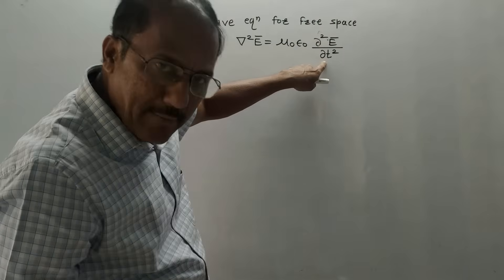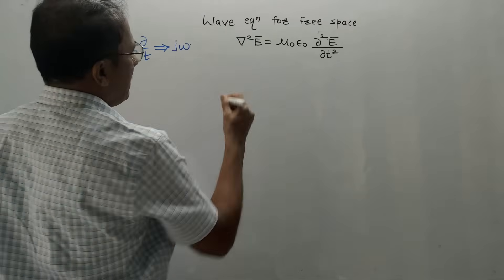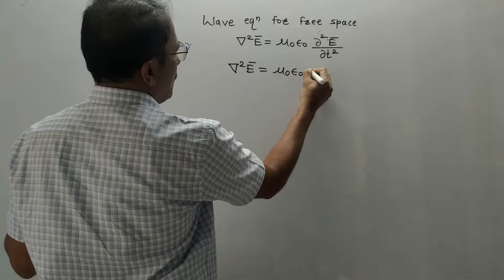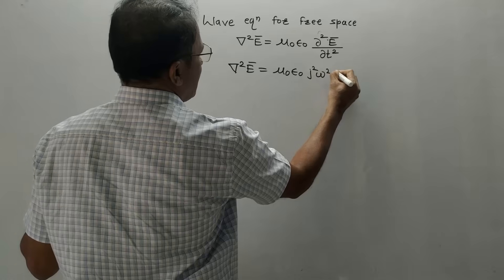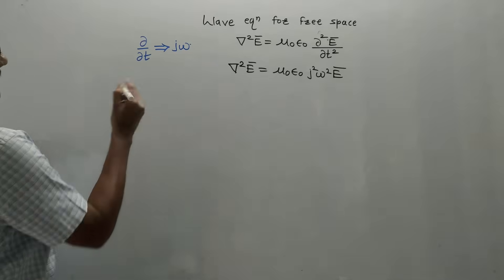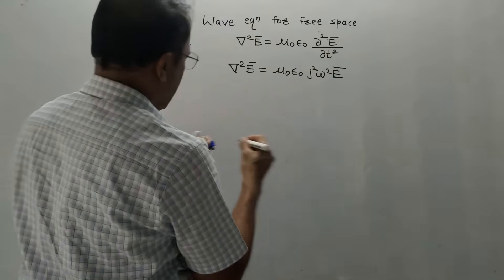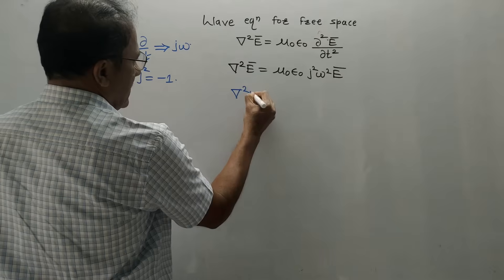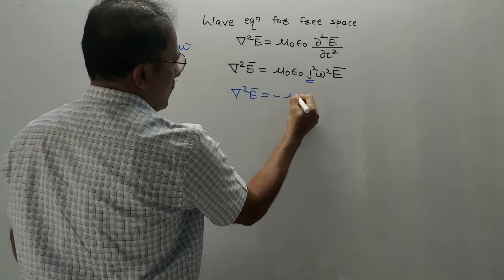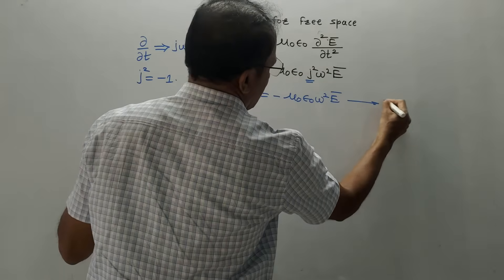This term contains (∂/∂t)², so it becomes j² and ω². The next equation can be written as: del squared E-bar equals μ₀ε₀ · j²ω² · E-bar. Remember the mathematical identity: j² equals minus 1. Substituting this, it becomes: del squared E-bar equals −μ₀ε₀ω² · E-bar. Let us call this equation number 1.